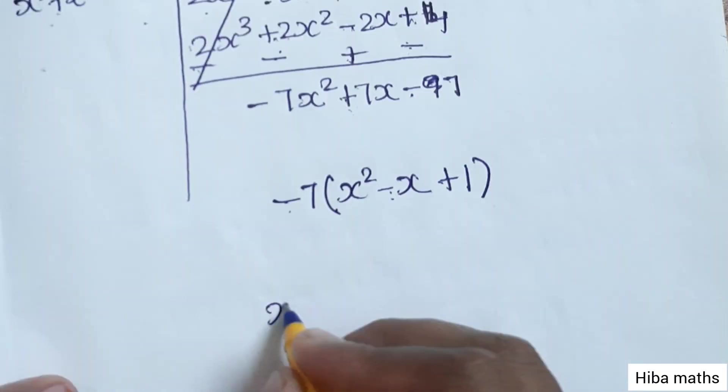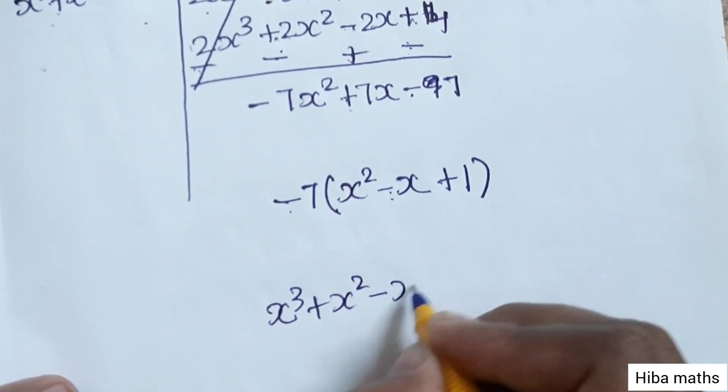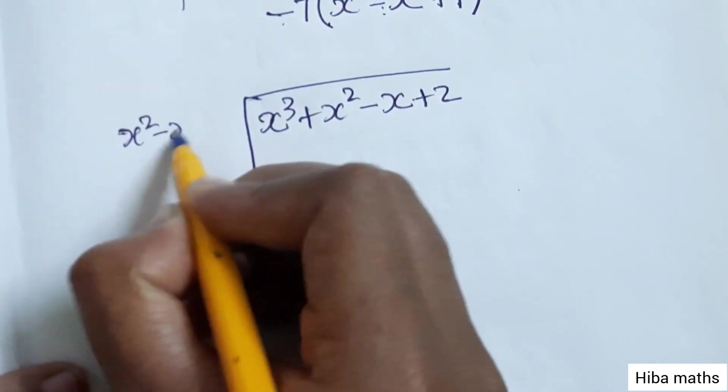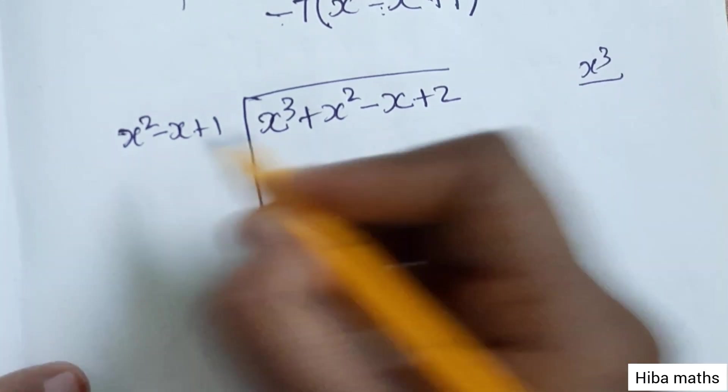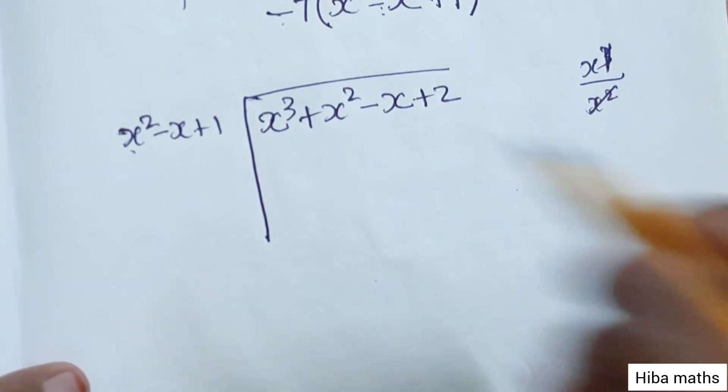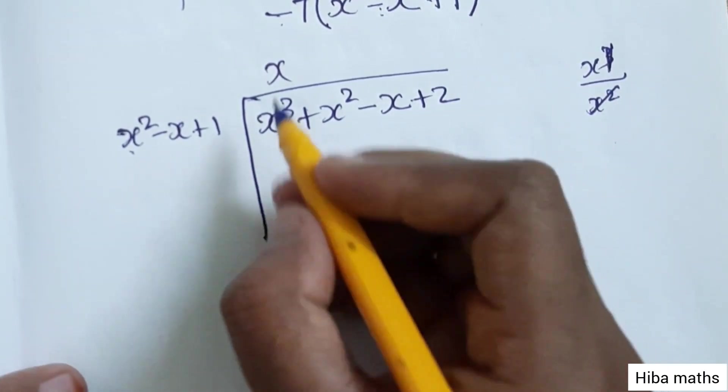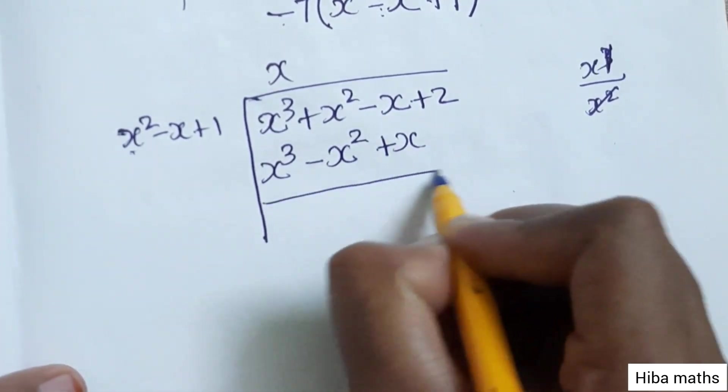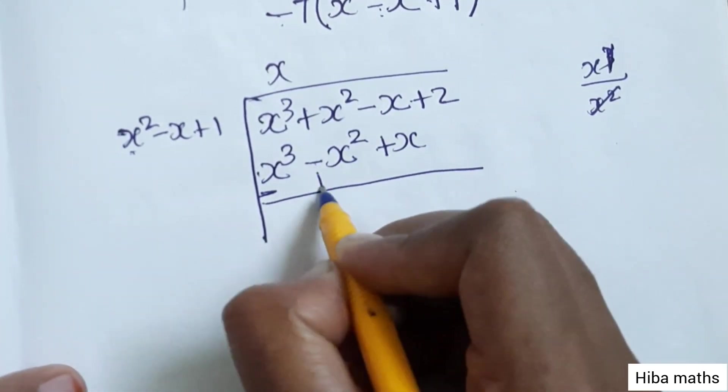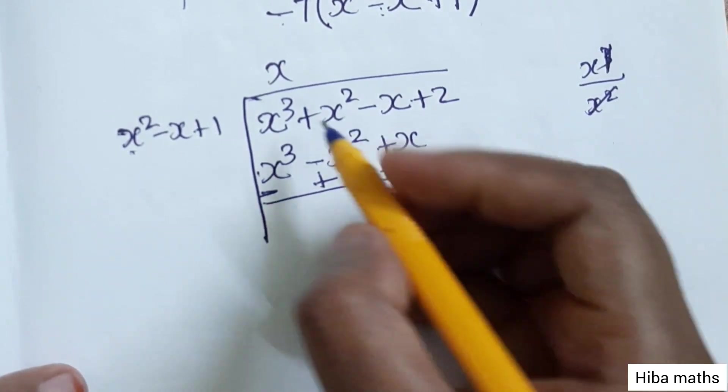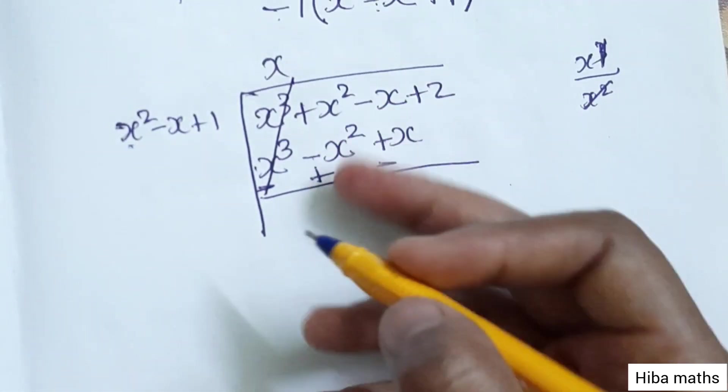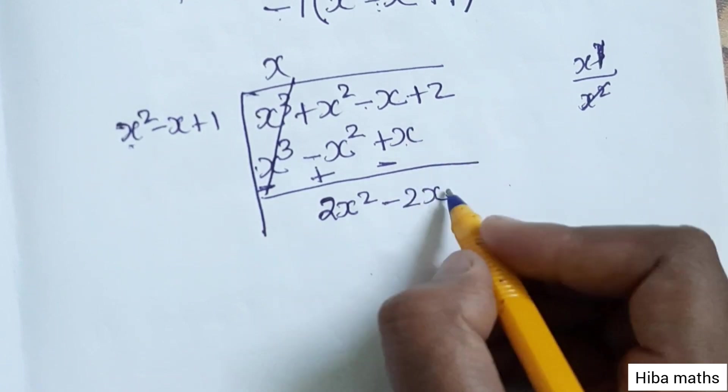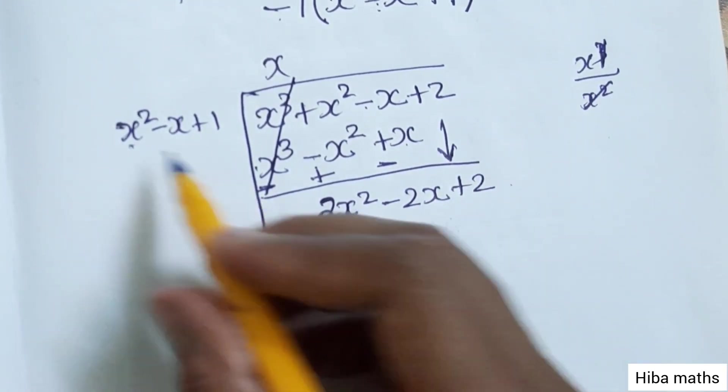So x³ divided by x² plus x. First term divided by first term: x³ minus x² plus x. The terms cancel out to give x² + x² = 2x², and minus x minus x gives minus 2x, plus 2. Now let's divide the two terms.